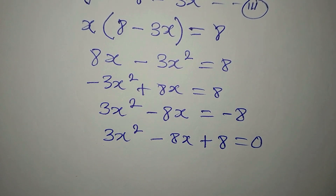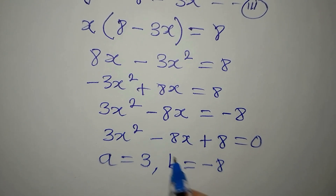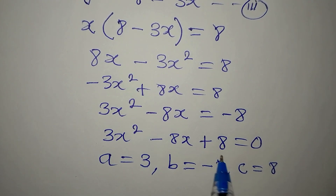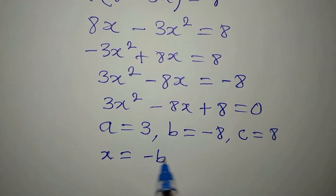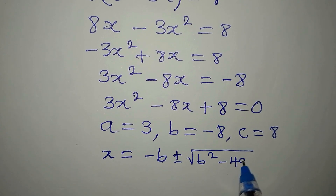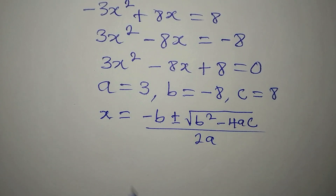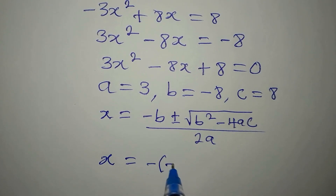The next step is to decide on the method. Using the quadratic formula: a is 3, b is minus 8, and c is plus 8. The formula is x equals minus b plus or minus square root of b squared minus 4ac, all divided by 2a. So x equals minus of minus 8...